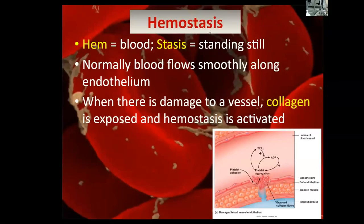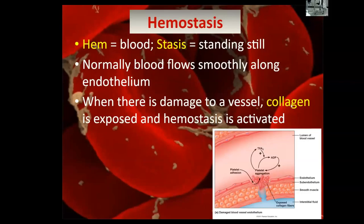Hemostasis — we're big on words here, understanding the Greek or Latin origination. 'Hemo' is referring to blood: hematopoiesis, hemostasis, hemoglobin — anything with 'hemo' refers to blood. 'Stasis' is standing still or stopping, so it's literally the standing still of blood. 'SIS' endings are usually processes. So normally blood flows smoothly along the endothelium — that's the inner lining of the blood vessels, capillaries, veins, arteries. When there's damage to the vessel, collagen is exposed. Collagen is a protein, and proteins are typically sticky in nature. So the sticking of the platelets to this collagen initiates the whole process of hemostasis. This is referred to as a cascade because it's a chain of events where one thing leads into the other.